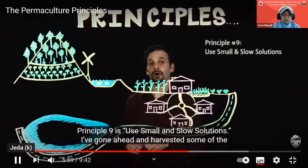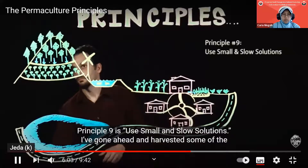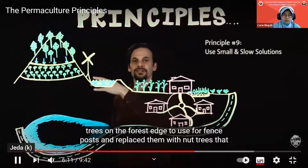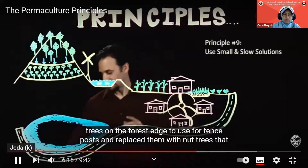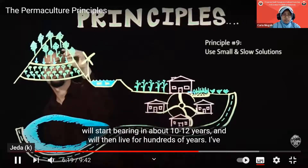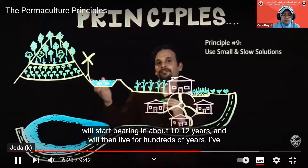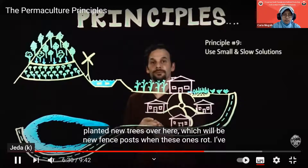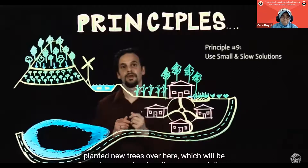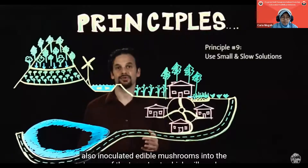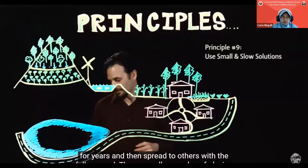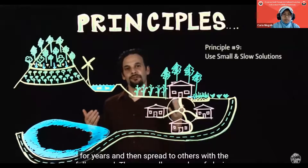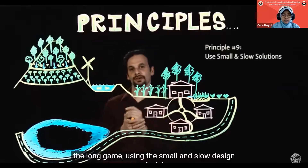Principle nine is use small and slow solutions. I've harvested some trees on the forest edge to use for fence posts and replaced them with nut trees that will start bearing in about 10 to 12 years, and will then live for hundreds of years. I've planted new trees to become new fence posts when these ones rot, and I've inoculated edible mushrooms into the stumps, which will produce for years and spread to others with fallen wood. These are all examples of playing the long game using the small and slow design principle.